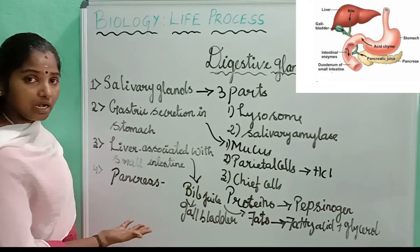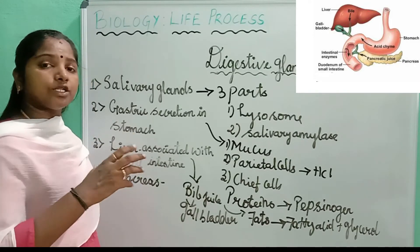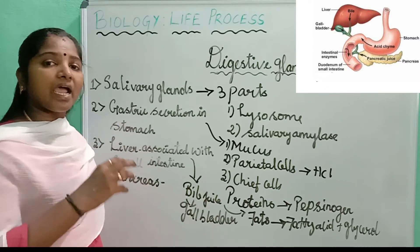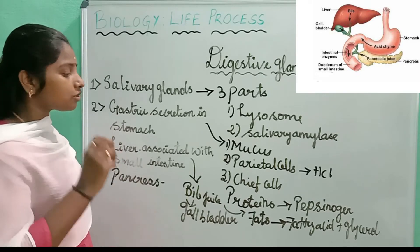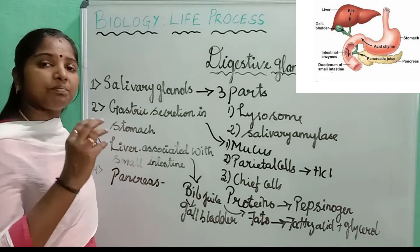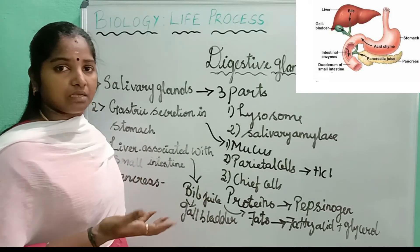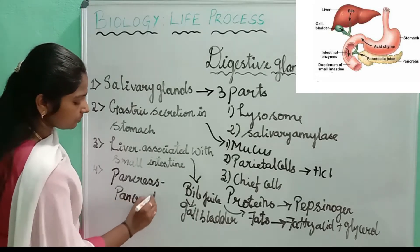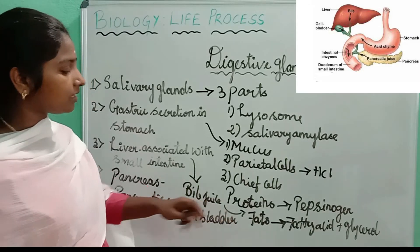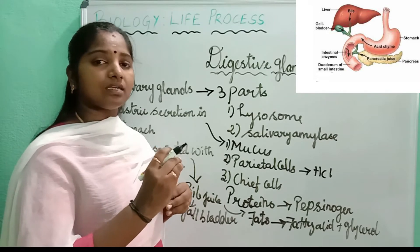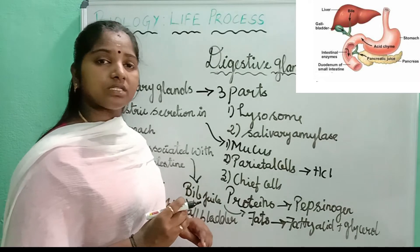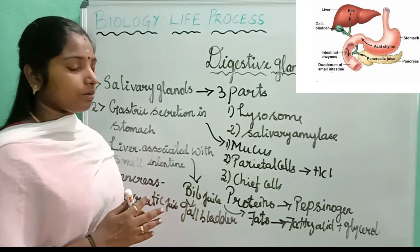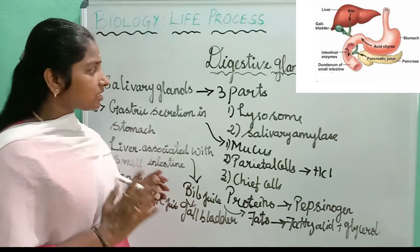The small intestine receives juices from all the glands and carries out the digestion process. From the liver it gets bile juice, and from the pancreas it gets pancreatic juice to convert pepsinogen and proteins into amino acids and simpler forms. The solid form of food is transformed into a liquid form and mixed with the blood to be transported to all parts of the body. The acidic medium is gradually converted into an alkaline medium once the pancreatic juice acts in the small intestine, and it is absorbed.